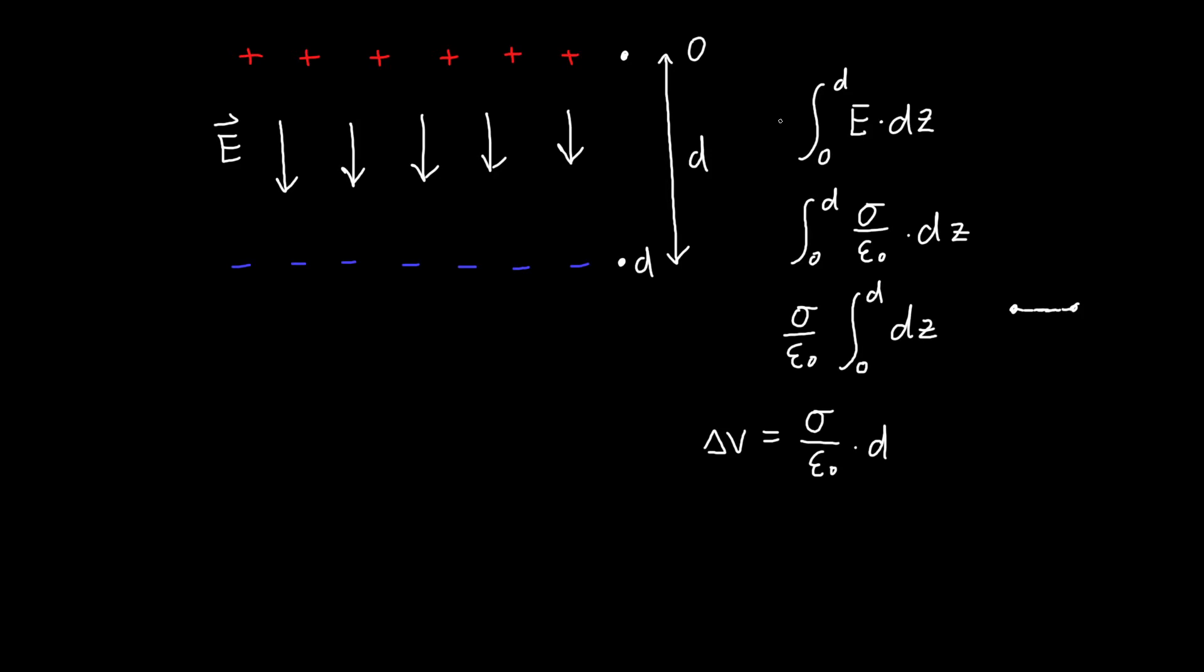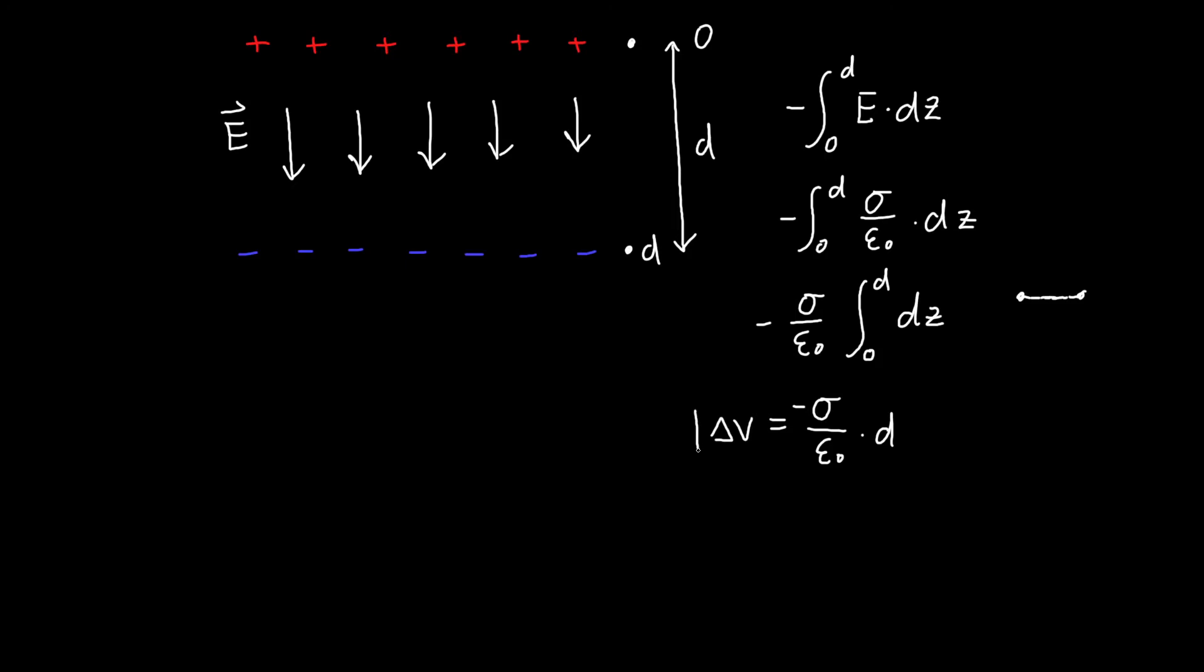So our difference in voltage between the two plates is sigma over epsilon naught times d. Now we should be careful about signs here. Fortunately, when calculating capacitance, you don't need to worry too much about signs. But there is a negative sign out front of all this. So because we only care about the magnitude of delta V, we don't need to worry about that minus sign.